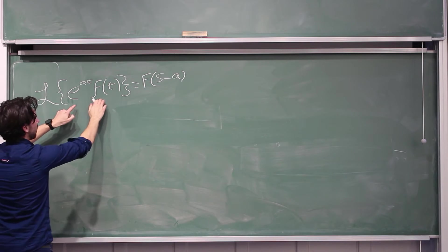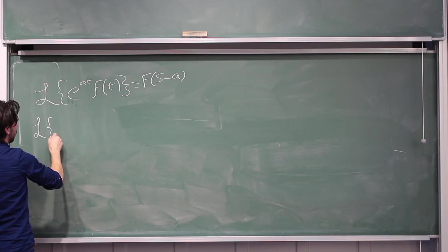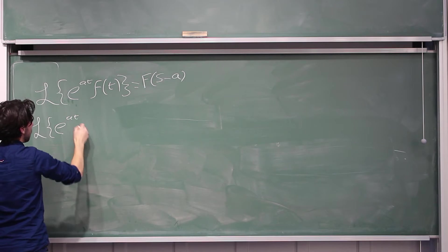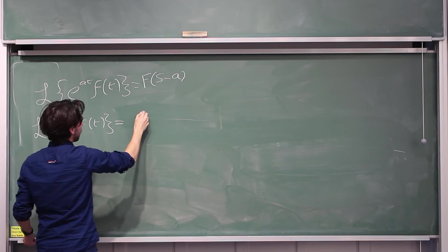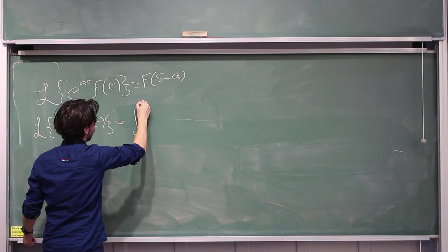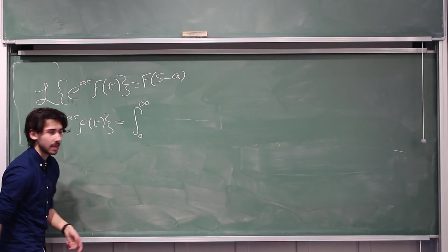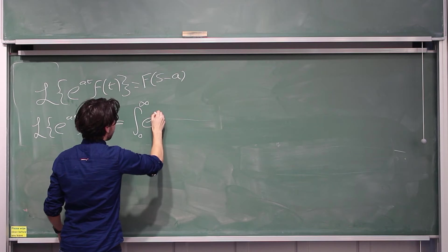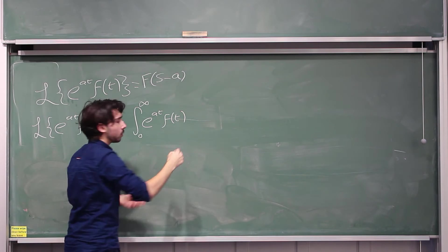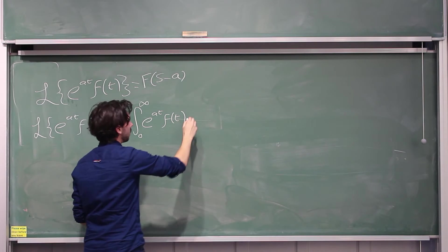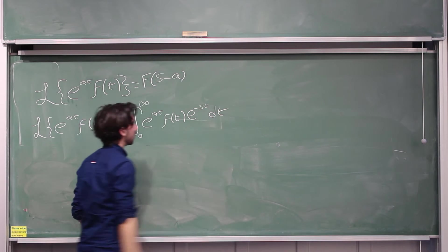So all we're going to do guys is take the Laplace transform of this. So the Laplace transform of e to the at times the lowercase f of t, we're going to use the definition of the Laplace transform, this is the integral from zero to infinity of, and we're just going to let f of t be e to the at times f of t. So it's going to be e to the at times f of t and then as you always do with your Laplace transform, this is also times by e to the minus st and we're integrating dt.